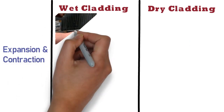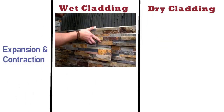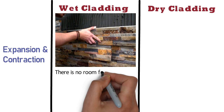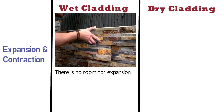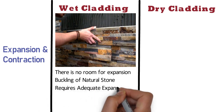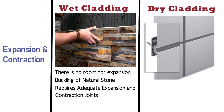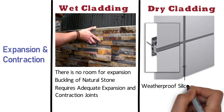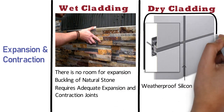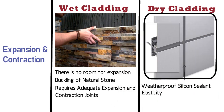Expansion and contraction: Due to the edge-to-edge bonding in wet cladding, there is no room for later expansion, which could result in buckling of natural stone. Hence, this method requires adequate expansion and contraction joints. On the other hand, in case of dry cladding, the stone joints are sealed with weatherproof silicone sealant. The whole system has some kind of elasticity, which can eliminate the influence of expansion and contraction caused by temperature or displacement of the main structure.